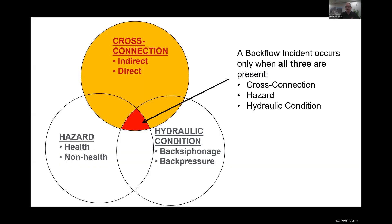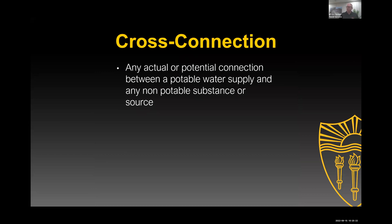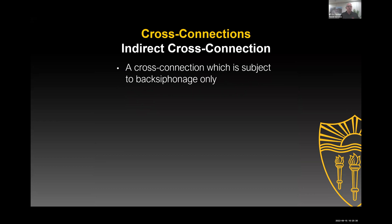Back pressure or back siphonage requires a cross connection — a physical connection. It's a direct or indirect connection: an actual or potential connection between potable water and any non-potable substance or source. If it's indirect, it's subject to back siphonage only. If it's direct, it's subject to back pressure or back siphonage. For example, a recirculating fountain: the pump continually recirculates. If the makeup line goes into piping under sufficient pressure, that could create back pressure. If the line just goes over the lip and drops into the reservoir, then only back siphonage could occur — you'd need sub-atmospheric pressure to suck the water up over the rim and into the drinking water supply.